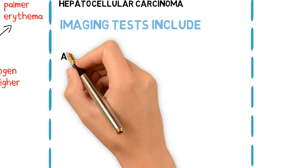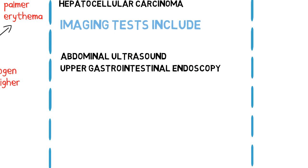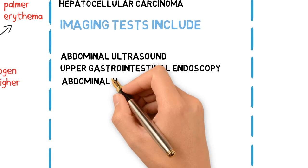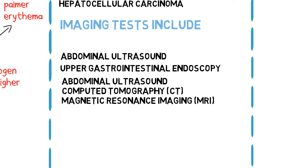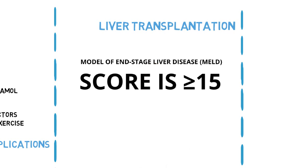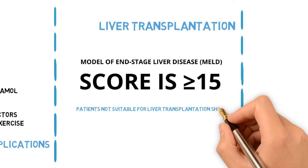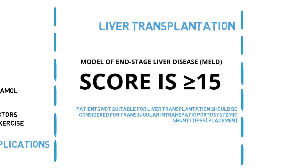Imaging tests include abdominal ultrasound for the detection of ascites, upper gastrointestinal endoscopy for the detection of gastroesophageal varices, and abdominal ultrasound, CT, or MRI for the detection of hepatocellular carcinoma. Liver transplantation: a survival benefit is seen when the MELD score is greater than or equal to 15. Patients not suitable for liver transplantation should be considered for transjugular intrahepatic portosystemic shunt (TIPSS) placement.